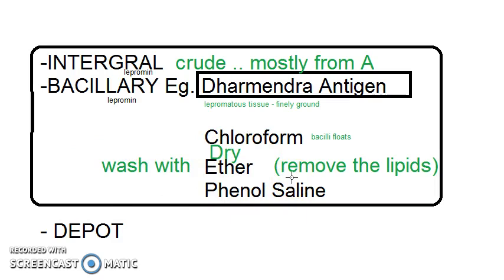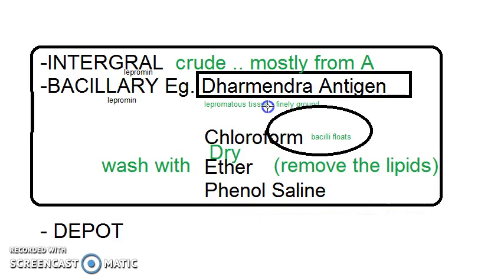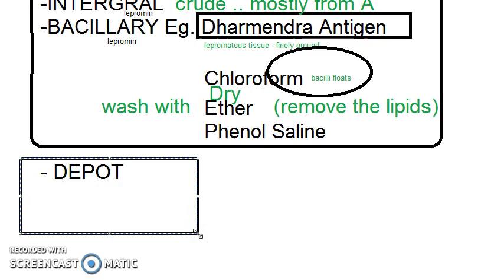Then with phenol saline, this antigen is injected. This is how the Dharmedra antigen is prepared, where there is more bacillary component. There is another type of antigen: the depot preparation, which will have more of oily media.